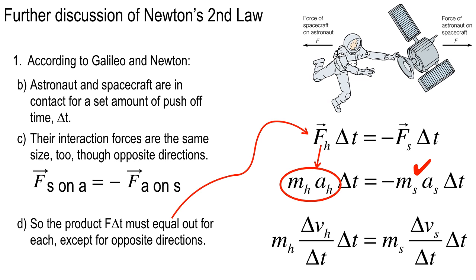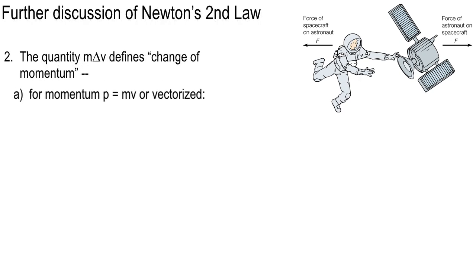Now we break down the acceleration into delta V over delta T. We already know that, long time definition of acceleration. Acceleration is delta V over delta T. In this case, delta V subscript H over delta T, and the same thing over with the spacecraft side. That's going to allow us to see that we've got M delta V on both sides.